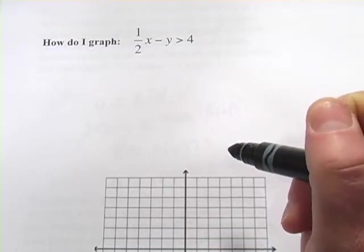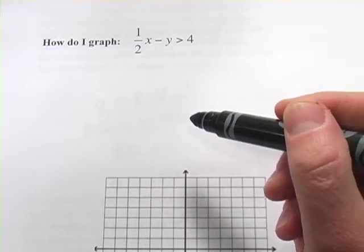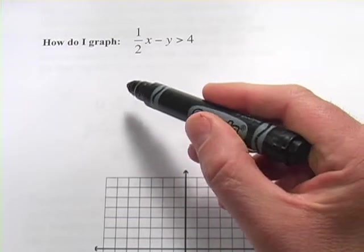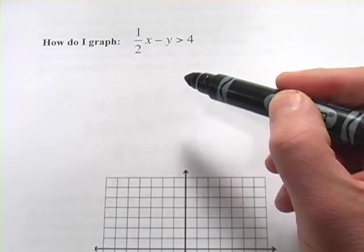A YouTube user, Terry Creed, had a question about how to graph linear inequalities that have fractions in them. And the answer, Terry, is basically the same way you would if it didn't have a fraction in it.